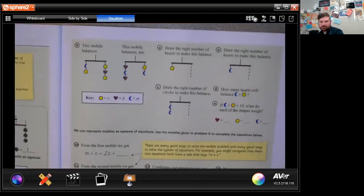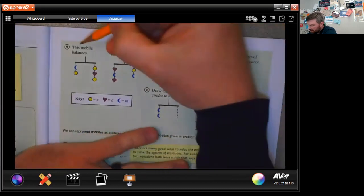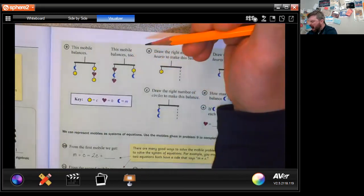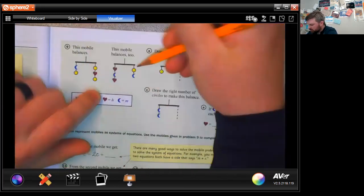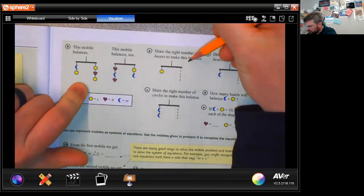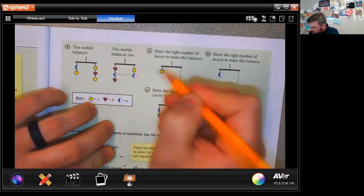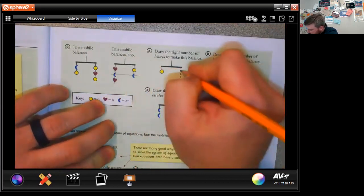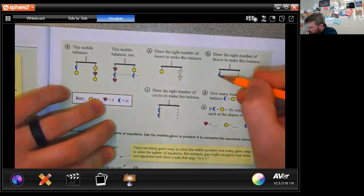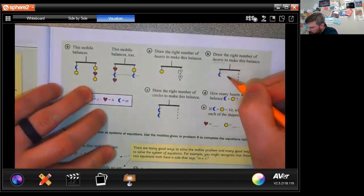Coming up here at number nine. We saw one of these in the last lesson. This mobile balances. This one balances too. But I don't know that they balance each other. So draw the right number of hearts to make this thing balanced. So here, these moons will cancel each other out. So a circle is two hearts. And how many moons? Draw the right number of hearts to make this balance. So I can cross these out, and I know that a circle is two hearts.